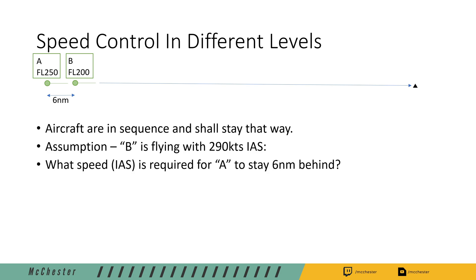What indicated airspeed do I instruct aircraft A to fly in order to stay six nautical miles behind? The rule of thumb is for the same indicated airspeed, 1,000 feet above equals a ground speed difference of six knots. So if two aircraft 1,000 feet apart are flying the same indicated airspeed, the aircraft that is 1,000 feet higher will fly six knots faster over ground. For 2,000 feet the aircraft above will fly 12 knots faster and so on.